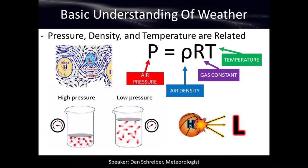In high pressure, we have sinking air in the atmosphere; in low pressure, there is rising air. Not only does air flow from high pressure to low pressure — just like a basketball or car tire filled with air that deflates when you put a hole in it, because air always flows from high pressure to low pressure — but the air also has a vertical component. In high pressure the air is sinking; in low pressure the air is rising.